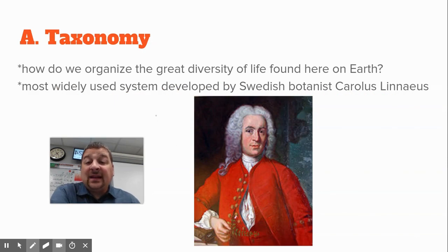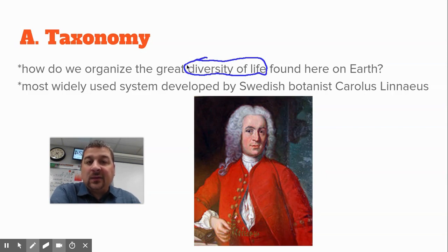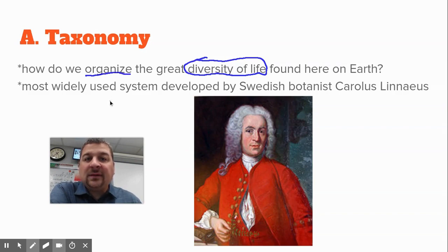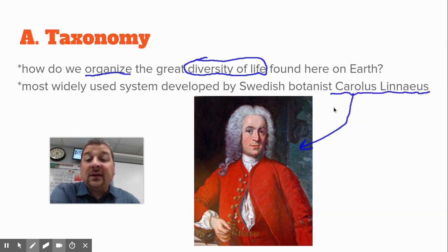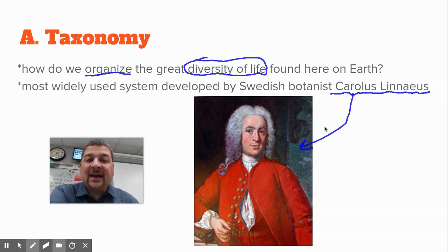Why do we need to classify things? Because of the great diversity of life here on Earth, it makes sense to put it in categories and make it easier to talk about and organize. The system we'll use was developed by a Swedish botanist called Carolus Linnaeus, who tried really hard to classify every living thing that they knew about at the time.